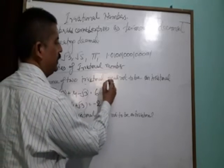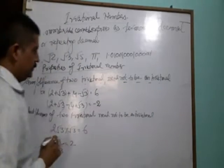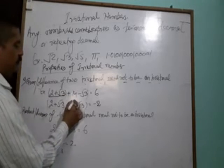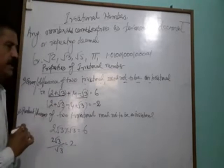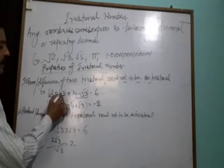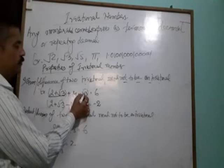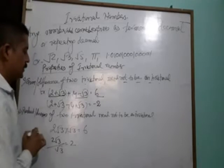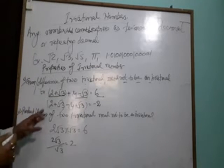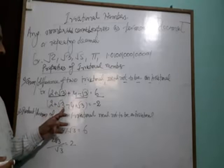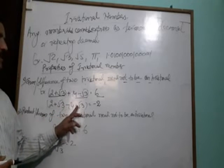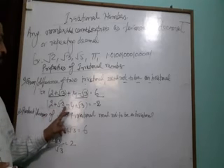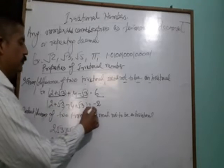Properties of irrational numbers. First, sum or difference of two irrationals need not be irrational. Just an example: 2 plus root 3 is irrational, 4 minus root 3 is also irrational. Then we add them: root 3 minus root 3, that would be terminating, and 2 plus 4 equals 6. Another difference: 2 plus root 3 minus 4 plus root 3 equals 2 minus 4 equals minus 2.